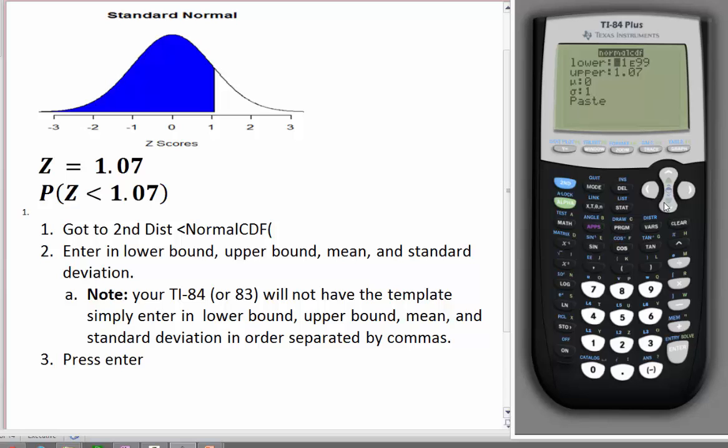So first, put in your lower bound. This is negative 1 e to the 99. This is essentially negative infinity. All normal distributions go from negative infinity to positive infinity. So we want to put this in as our lower bound, because this just keeps going on forever and ever. We can enter this by putting in a negative 1. Here's the e button, this double ee, and then we go to 99.